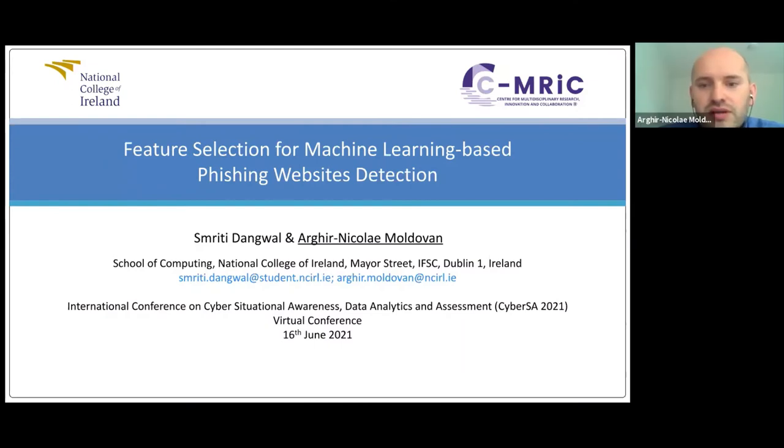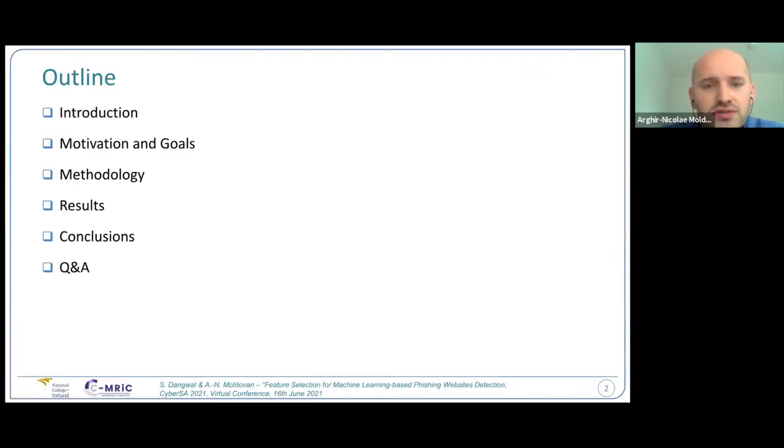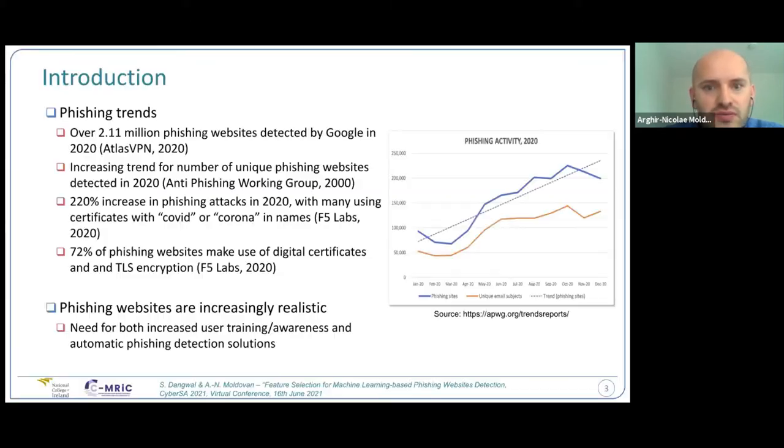Hi, I'm Dr. Admir Nikolai Moldovan from National College of Ireland. I will present this project which was based on Smriti's work. Smriti was an MSc student on our MSc in Cyber Security. Basically the focus is on machine learning and feature selection for website phishing detection. The outline of the talk: very brief introduction, motivation and goals, methodology, the results and conclusions, and then I will take questions and answers.